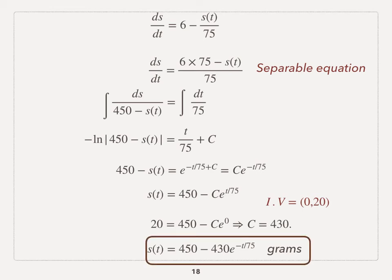So the function that describes the amount of salt as time t is s equals 450 minus 430e raised to negative t over 75. Again, this is a separable equation. We've got to know how to solve a separable equation.